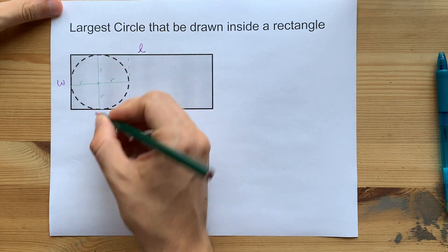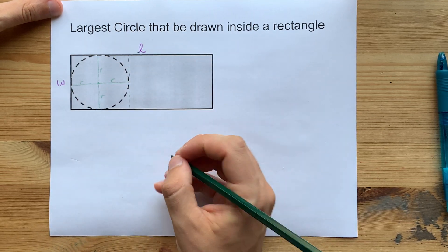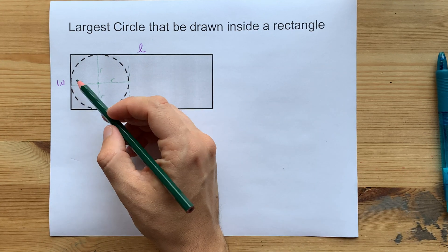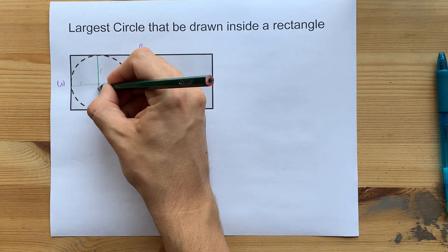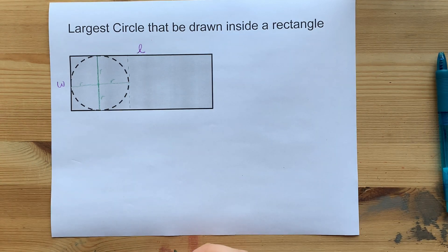So the idea here is you have to see which one's less, the length or the width. Whichever one of those is less, then that's going to correspond to two radiuses of your circle.